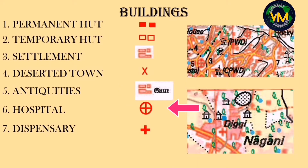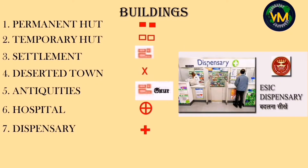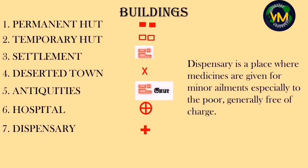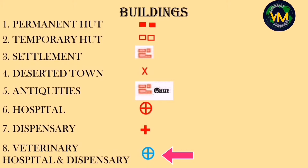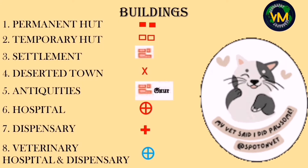Number six is hospital and number seven is dispensary. If you remove the circle outside the hospital symbol, it indicates a dispensary — a primary health center where medicines are given, generally free of cost. If the hospital symbol is in blue instead of red, then it is a veterinary hospital and dispensary.